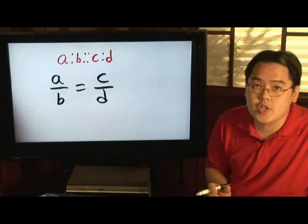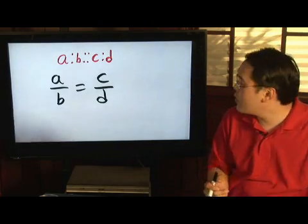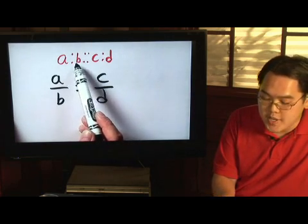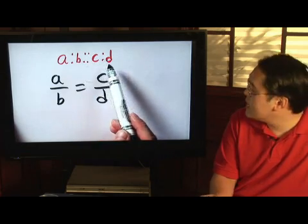Now, means and extremes are used often in ratios and proportions, and so what I want you to look at first is this ratio of A to B, and then you notice the set of double colons here, C to D.